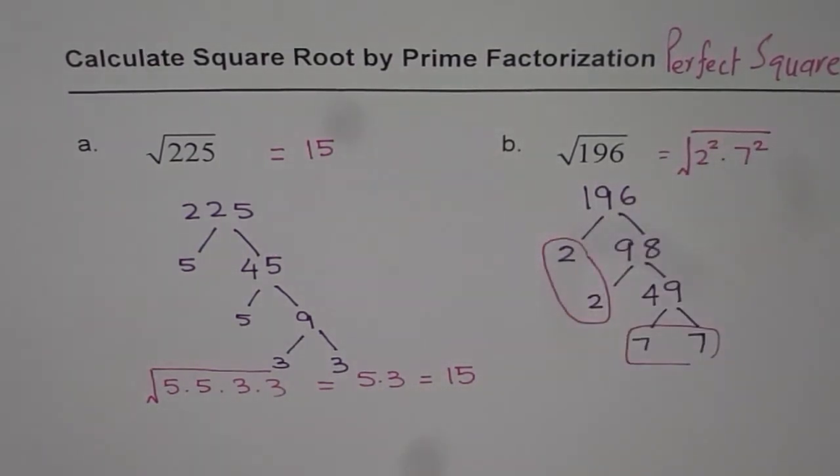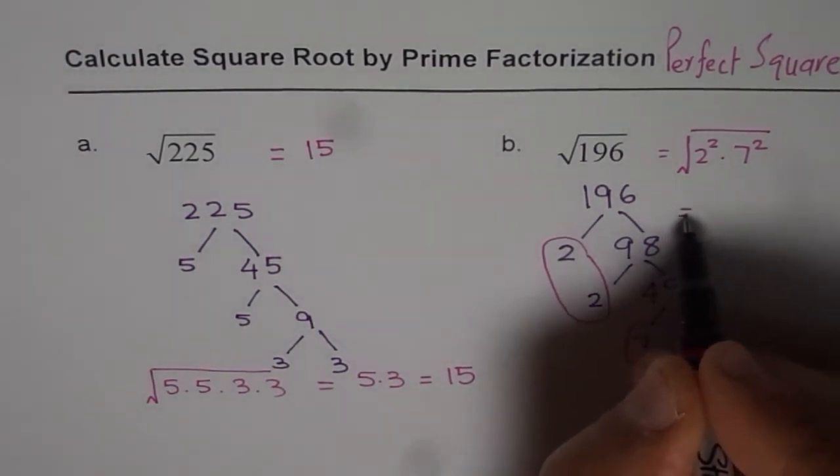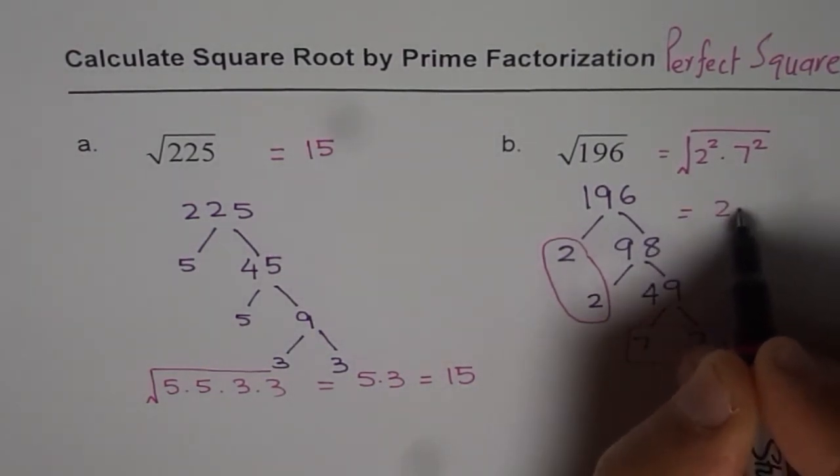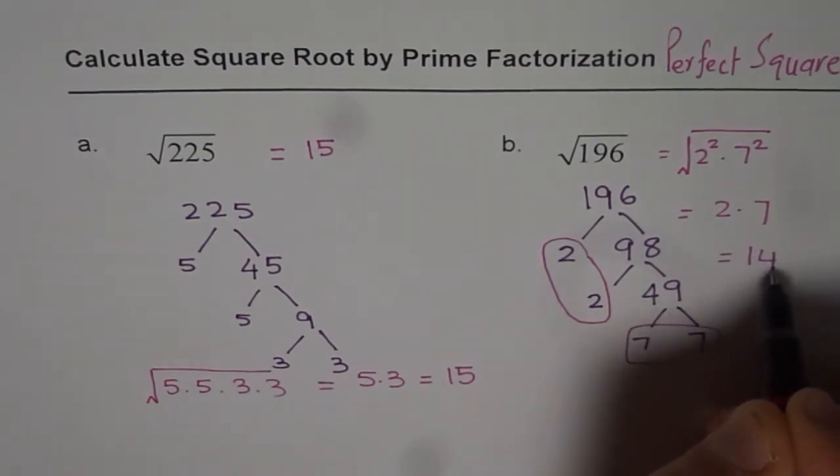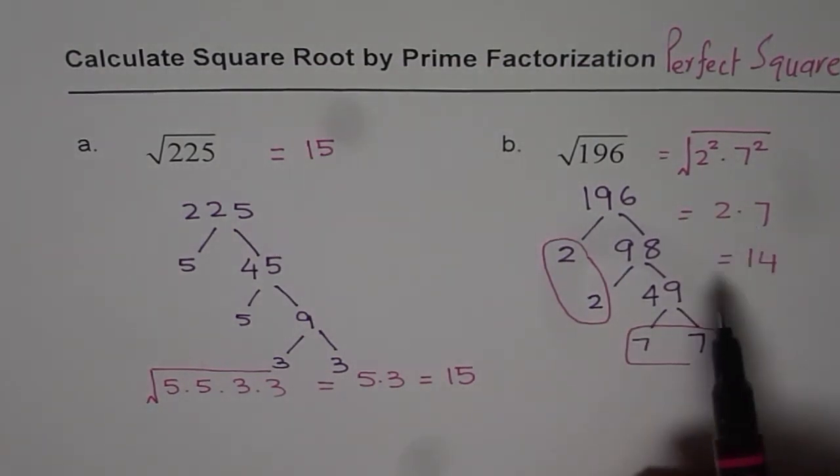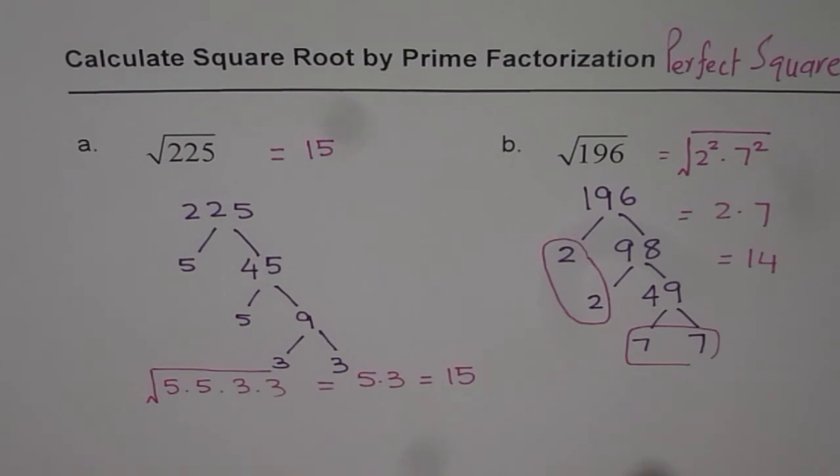That means the square root is equal to 2 times 7, which is equal to 14. When I write a dot in between, it means multiplication. I could have written them in brackets also.